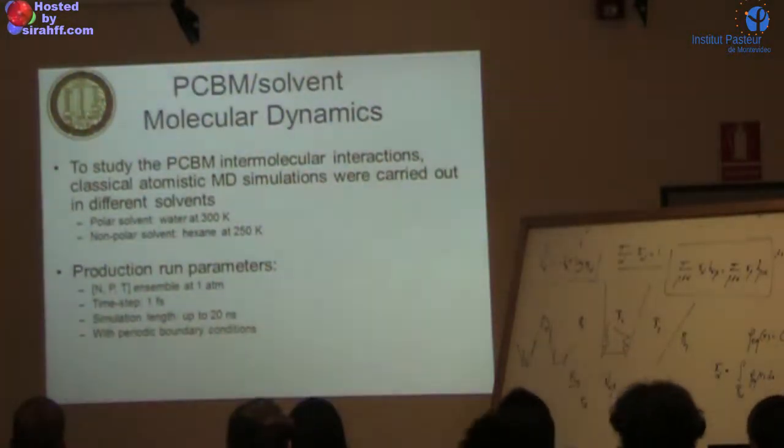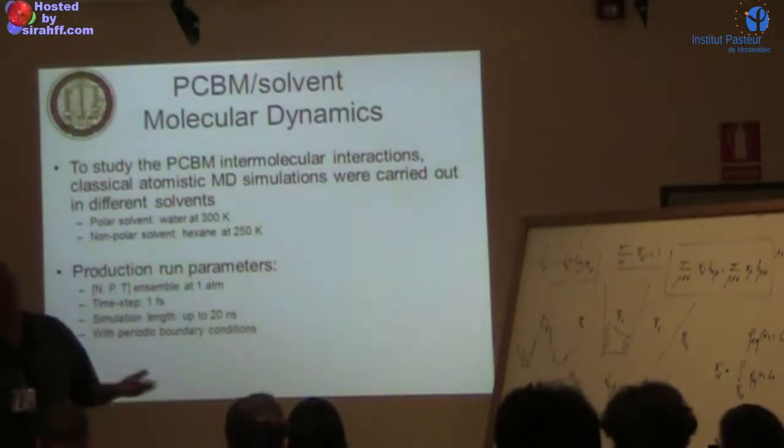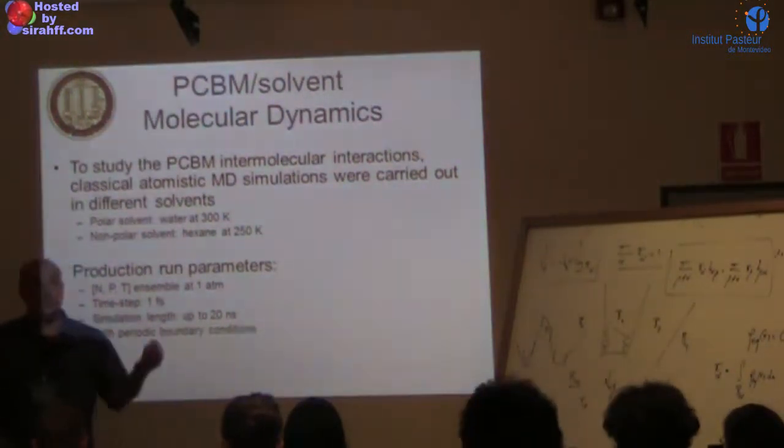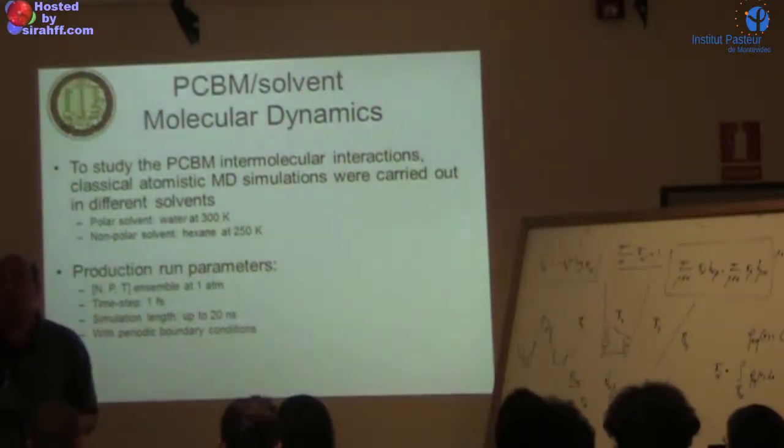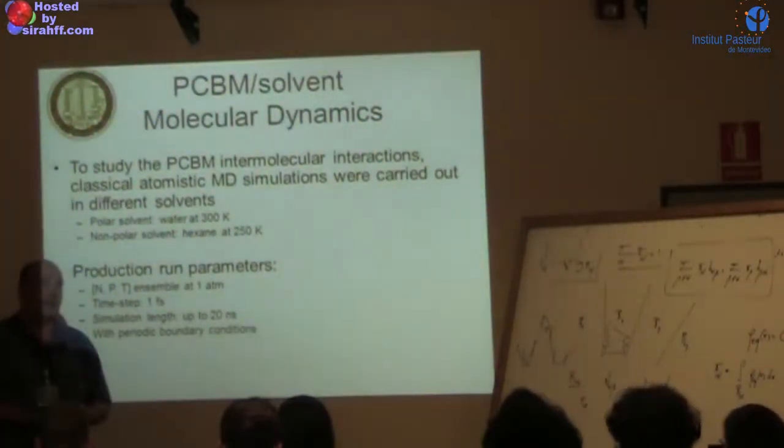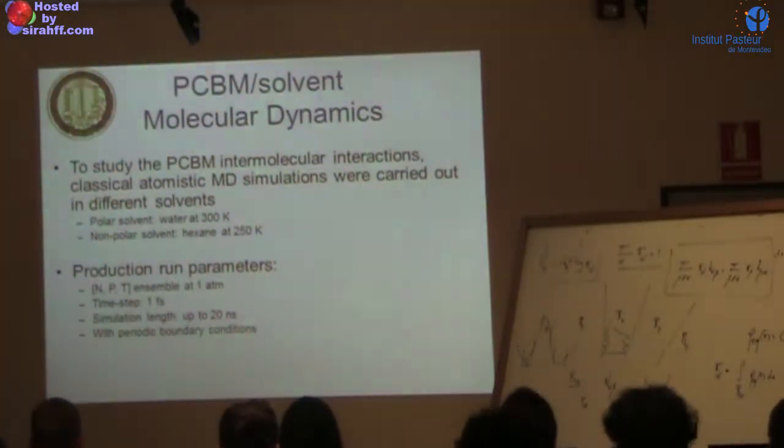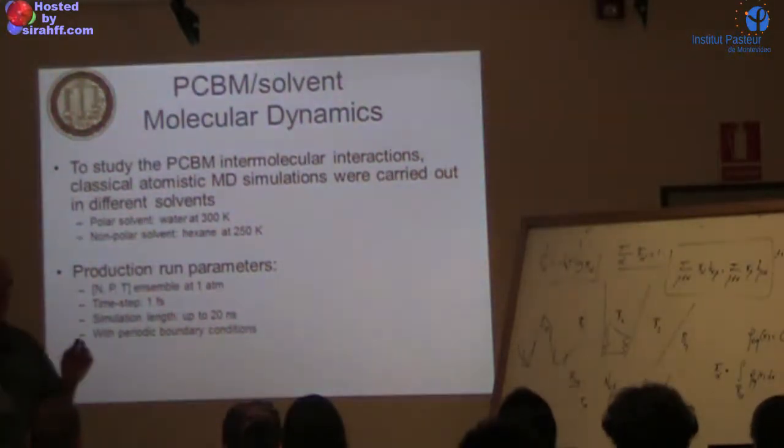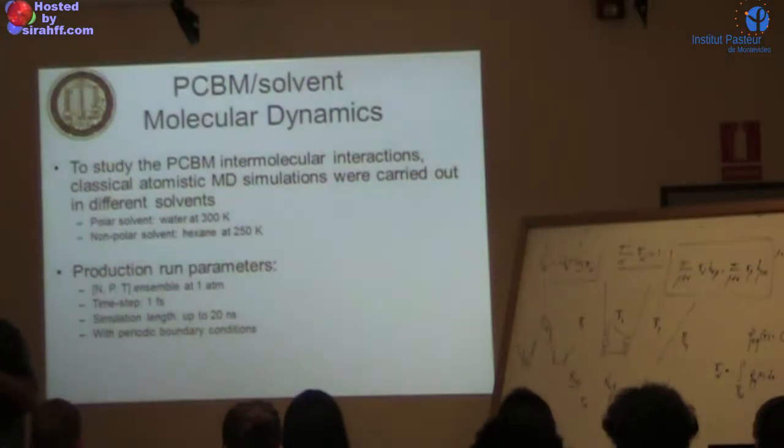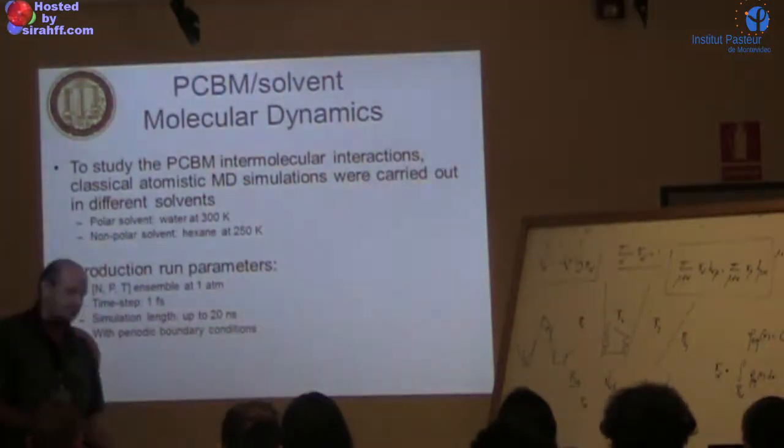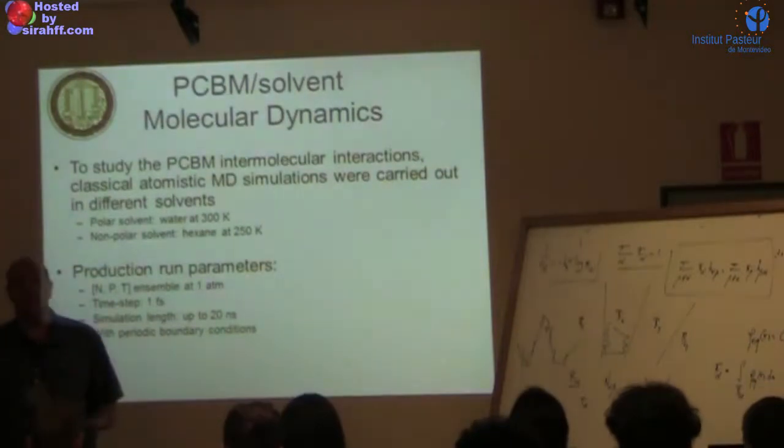The first thing we wanted was to validate these. We threw two PCBMs in water as well as hexane, calculated potential of mean force in the low molecular weight solvent. Obviously in water they cluster. In hexane they shouldn't cluster as badly. The main question is, how do these PCBM clusters look like? There's evidence that PCBM clusters into dimers in the bulk heterojunction devices.